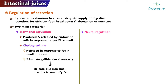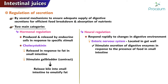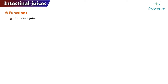Neural regulation: the secretion of intestinal juices is also regulated by the nervous system, which can respond rapidly to changes in the digestive environment. The enteric nervous system, located in the walls of the gut, can stimulate the secretion of digestive enzymes in response to the presence of food in the small intestine. The parasympathetic and sympathetic nervous systems also regulate digestive secretions, with the parasympathetic system generally stimulating secretion and the sympathetic system inhibiting secretion.